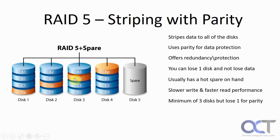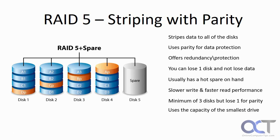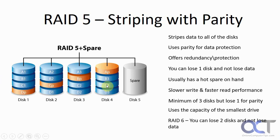So if these are each one terabyte disks, for the parity you're going to lose one terabyte out of four terabytes, giving you three terabytes of usable space. RAID 5 will use the capacity of the smallest drive, so if you mix drive sizes you'll lose usable space. There's also a newer version called RAID 6, which allows you to lose two disks at one time and still be okay, and that's starting to get more popular than RAID 5. You could also have two hot spares if you want.